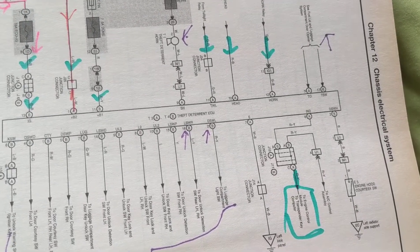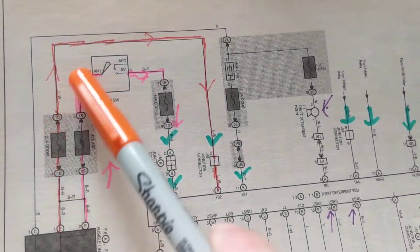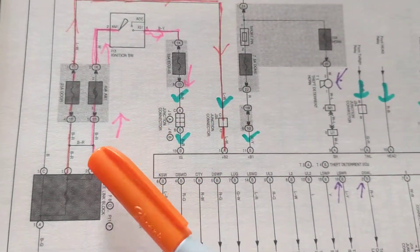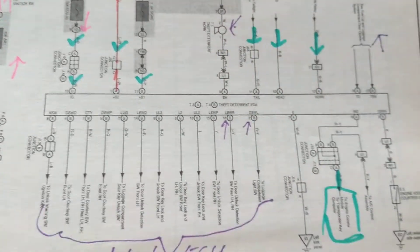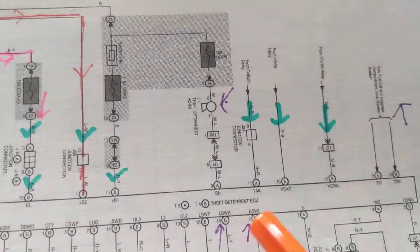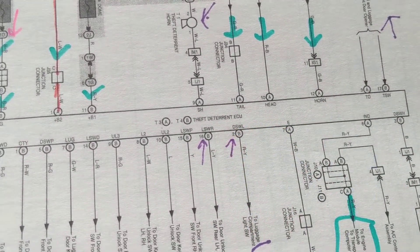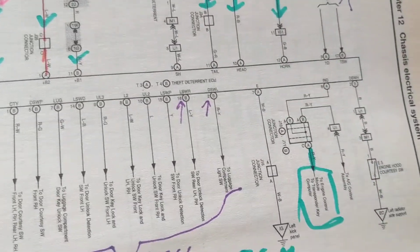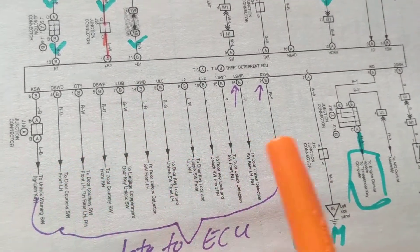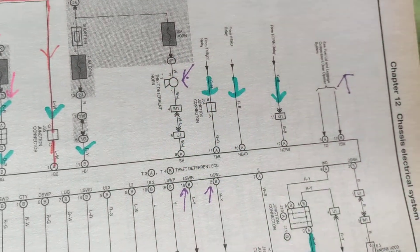If I'm troubleshooting this, I concentrate on the main components. The alarm is on - the theft deterrent system has been activated. Am I going to concentrate on the fuses? The fuses have nothing to do with it. I have to concentrate on understanding the theft deterrent ECU - the electronic control unit.